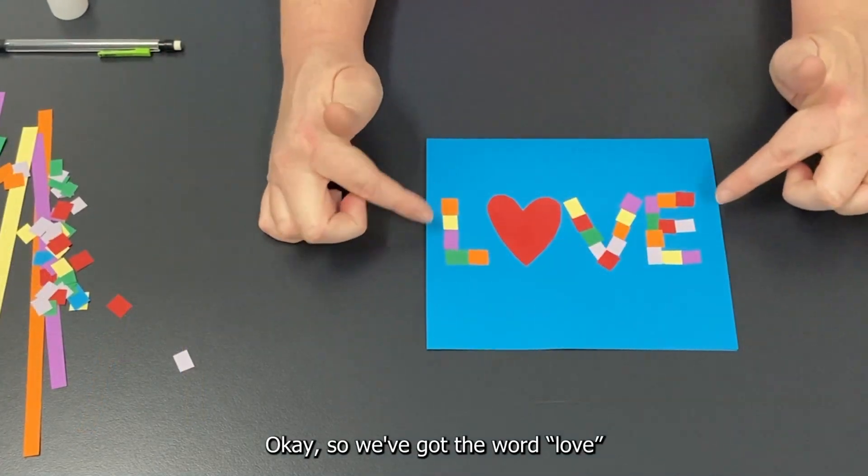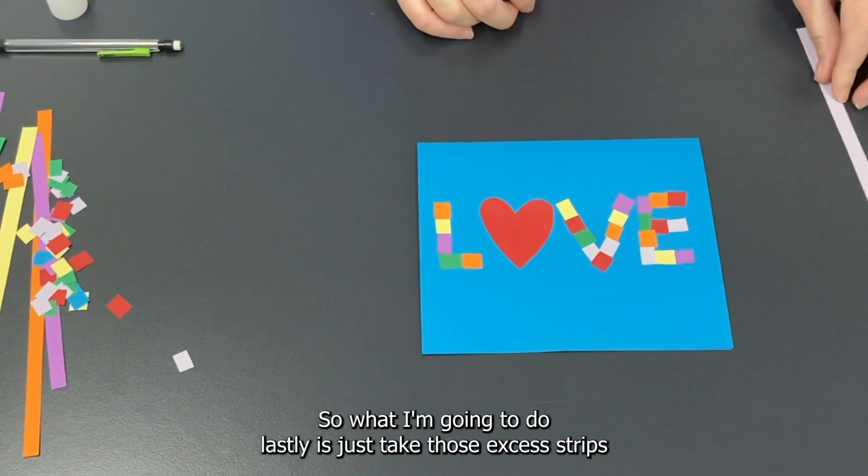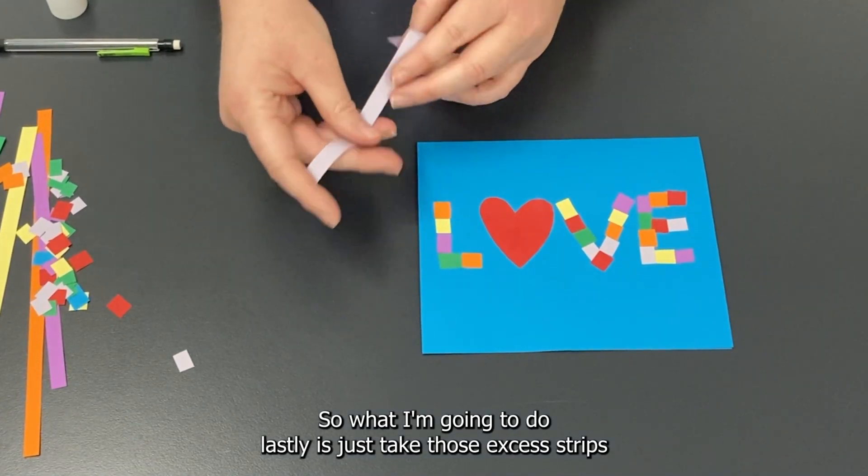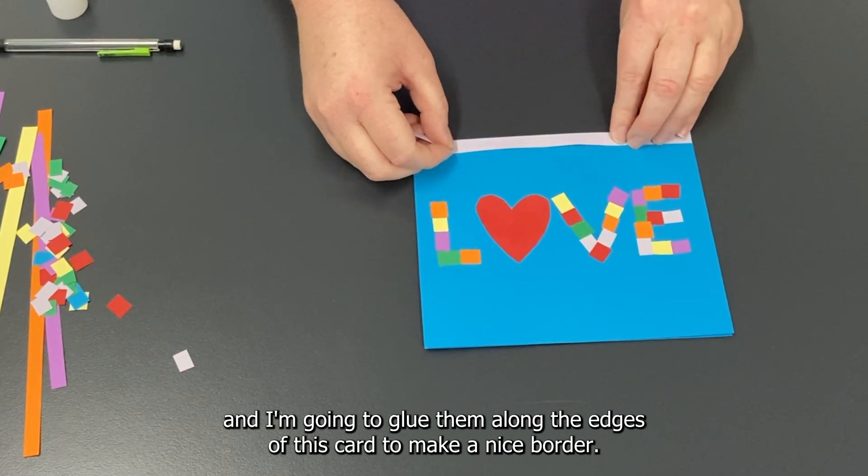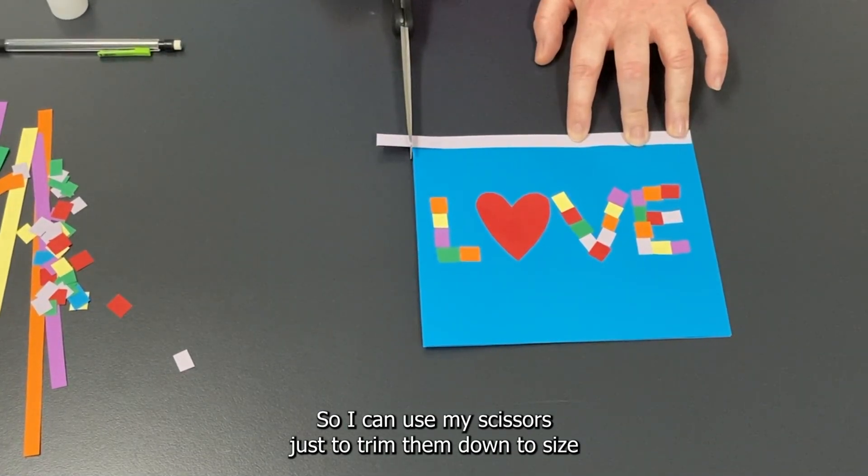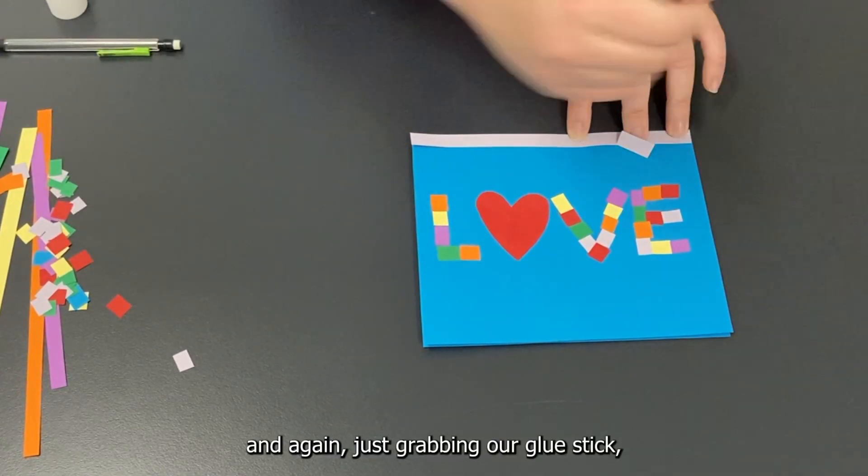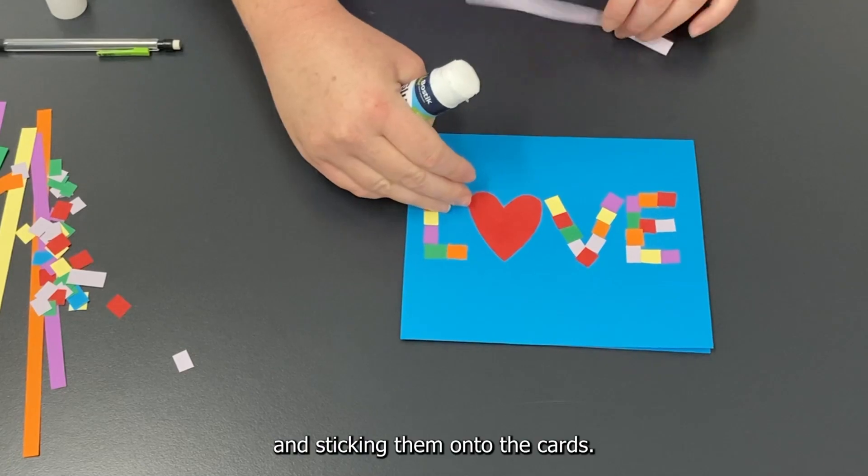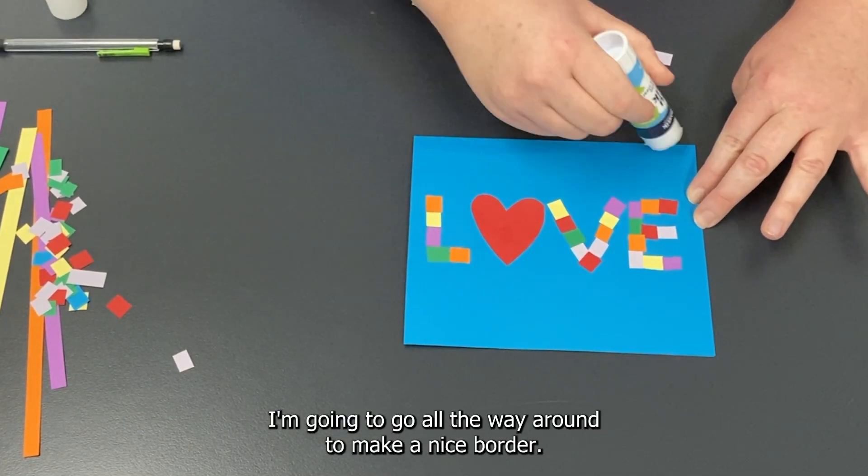Okay, so we've got the word 'love' all complete, looking very colorful, very pretty. So what I'm going to do lastly is just take those excess strips and I'm going to glue them along the edges of this card to make a nice border. So I can use my scissors just to trim them down to size, and again just grabbing our glue stick and sticking them onto the card, so I'm going to go all the way around to make a nice border.